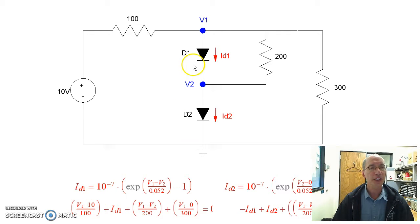I'm going to start with this circuit. This is a circuit with two voltage nodes and two diodes. The diodes are nonlinear devices with the following exponential relationship.